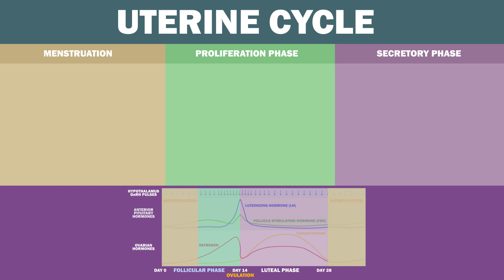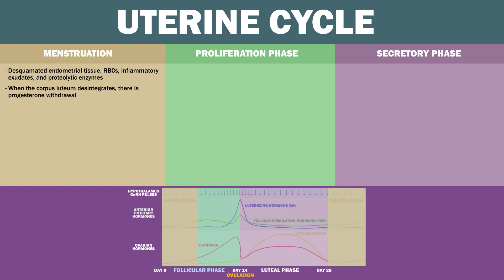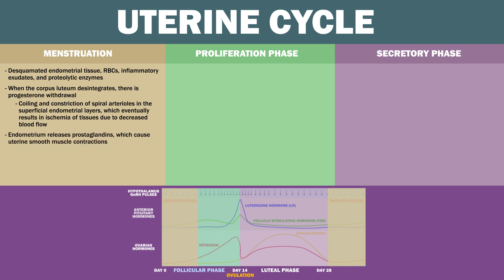Now let's briefly cover the uterine cycle. First, there's menstruation. Menstrual fluids consist of desquamated endometrial tissue, red blood cells, inflammatory exudates, and proteolytic enzymes. When the corpus luteum disintegrates, there is progesterone withdrawal. This results in coiling and constriction of spiral arterioles in the superficial endometrial layers, which eventually results in ischemia of the tissue due to decreased blood flow. The endometrium then releases prostaglandins due to decreased stability of lysosomal membranes, which cause uterine smooth muscle contractions, and the period begins. About two days after the start of menstruation, estrogen produced by the growing follicles stimulates the generation of a new surface endometrial epithelium, and gradually increasing estrogen concentrations eventually cause the discharge of menses to stop.